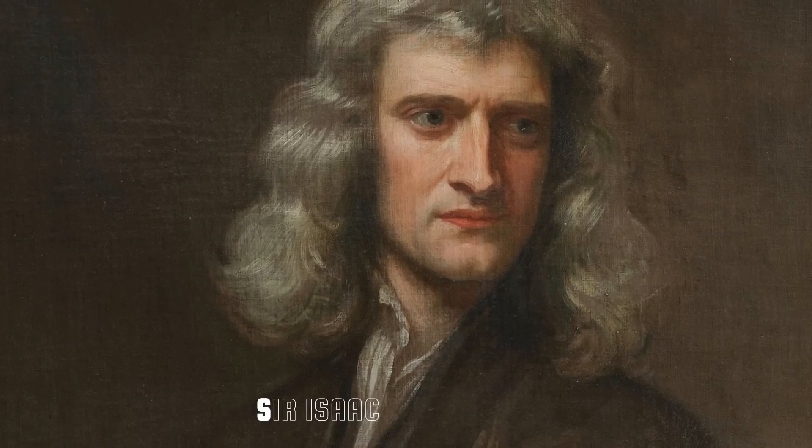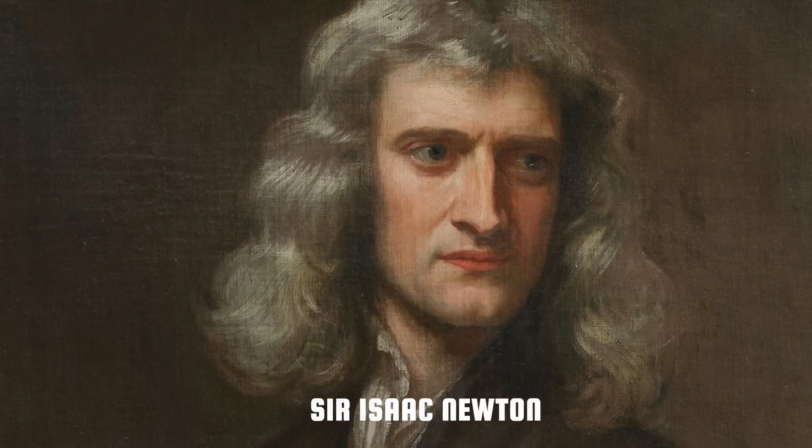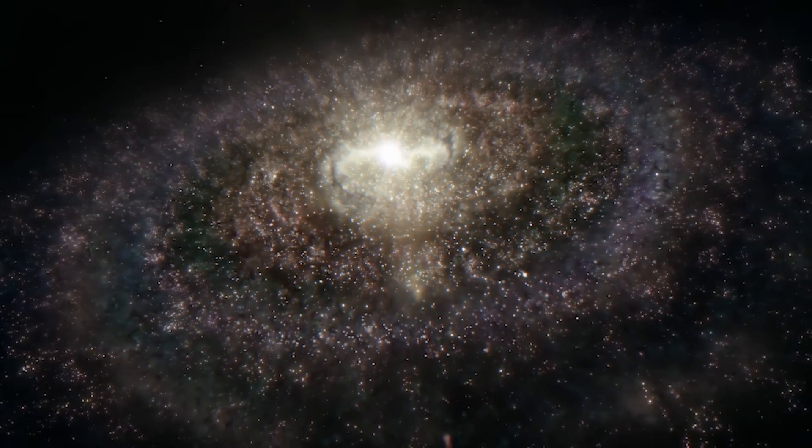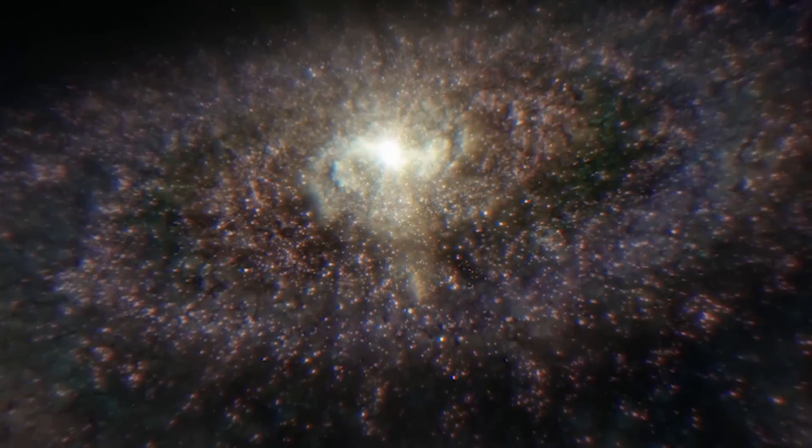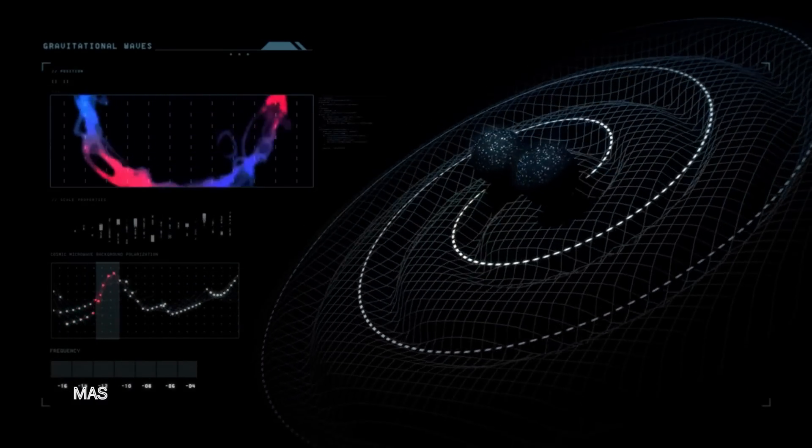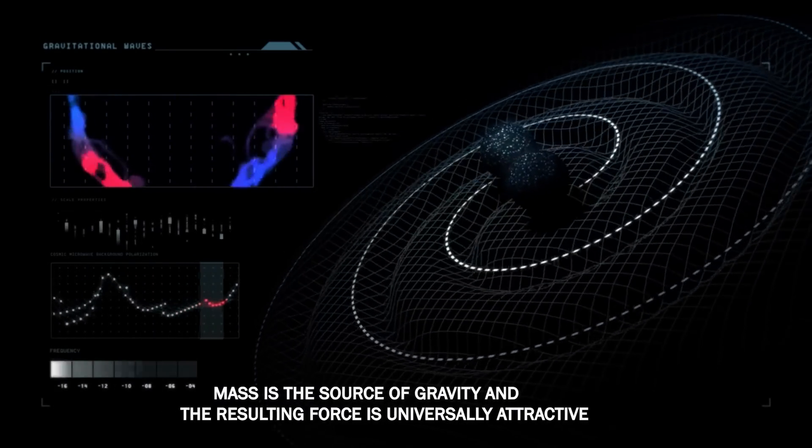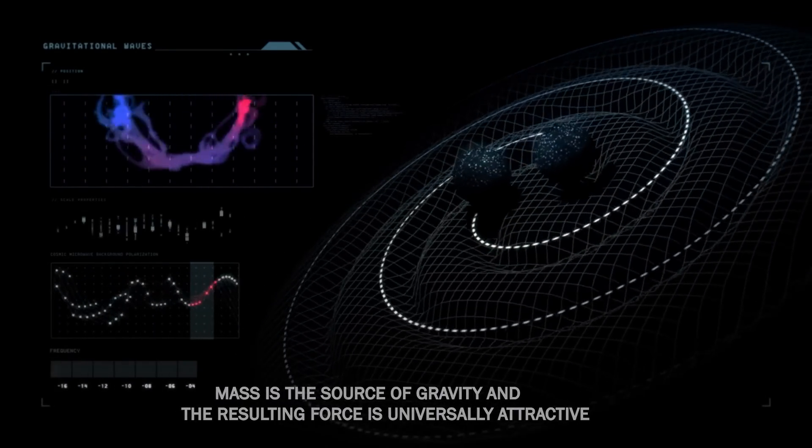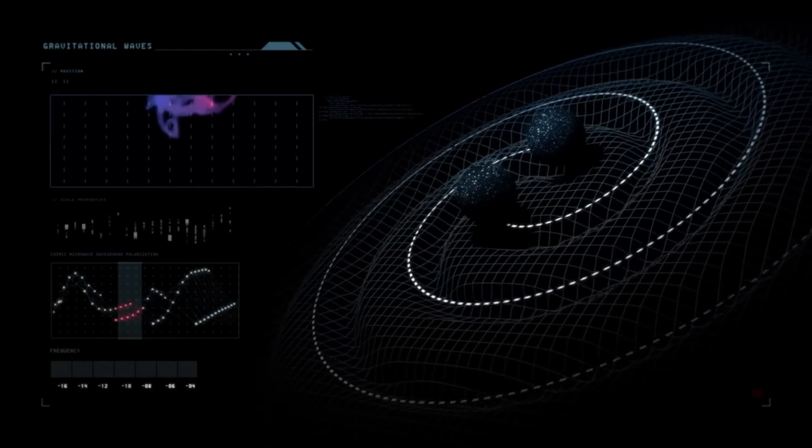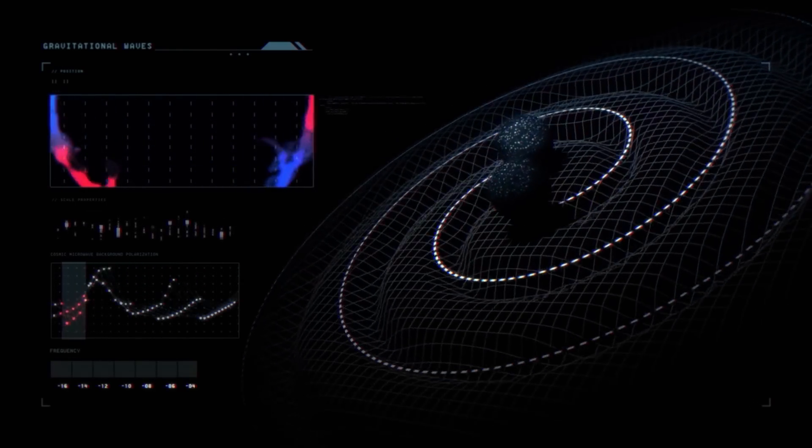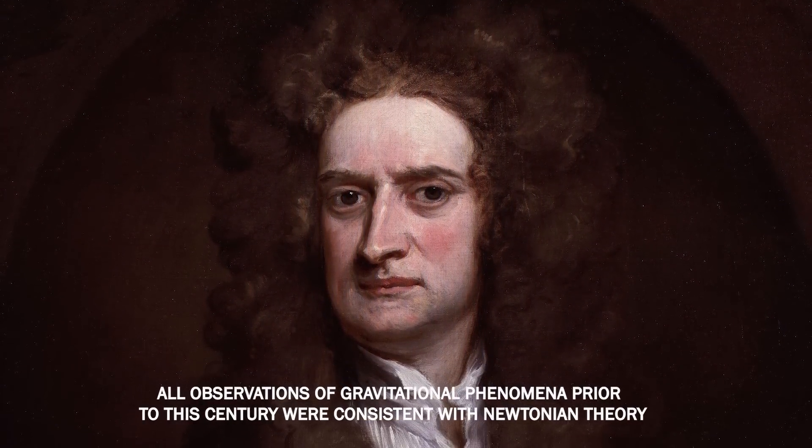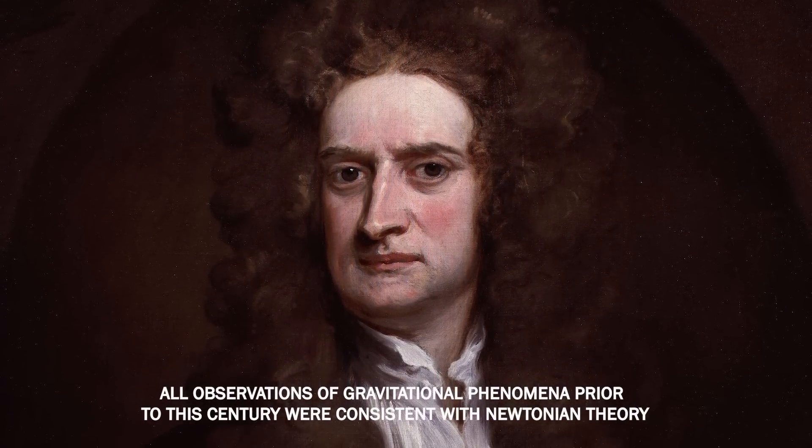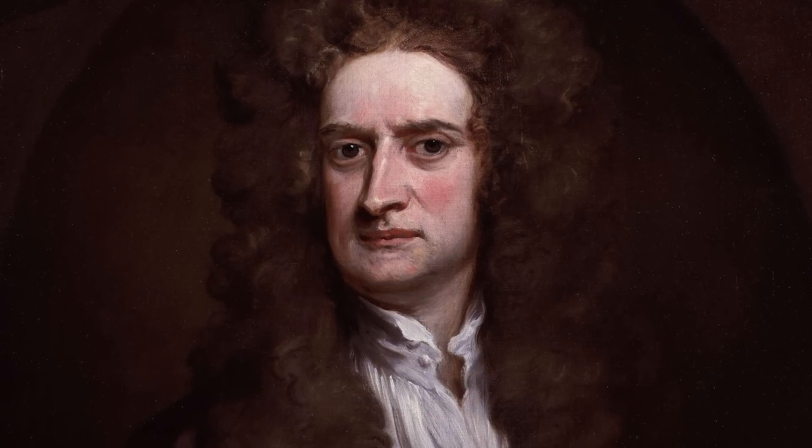Prior to Einstein, the best theory we had to describe the universe was Newton's theory, and the best cosmological model was the one proposed by Newton as well. In Newton's theory of gravitation, mass is the source of gravity and the resulting force is universally attractive. The empirical success of Newton's theory are numerous and familiar. All observations of gravitational phenomena prior to this century were consistent with the Newtonian theory, with some small exceptions.